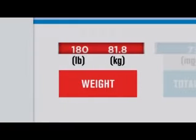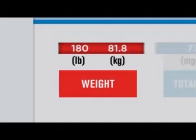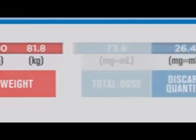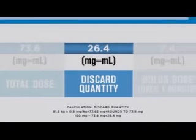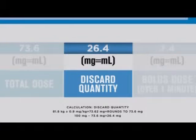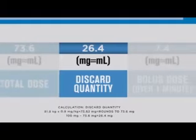Now that we've calculated the dose and successfully reconstituted the 100 milligram vial of Activase, let's move on to administration using the sample calculations for our 180 pound or 81.8 kilogram patient as a guide. The discard quantity for our sample patient is 26.4 milligrams or milliliter equivalent — this is the excess quantity that should be withdrawn from the 100 milligram vial and discarded before administering Activase.